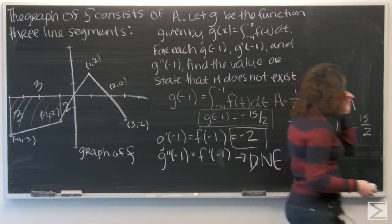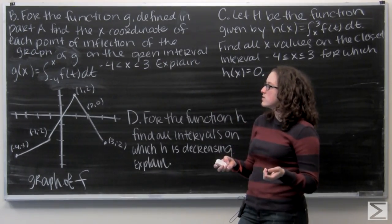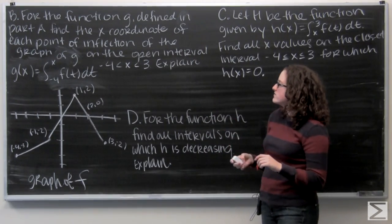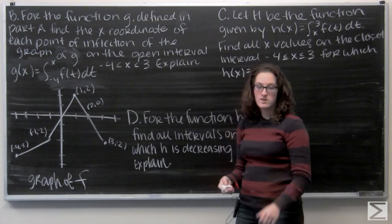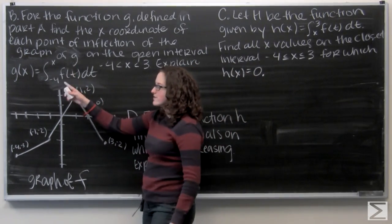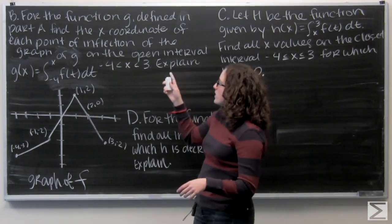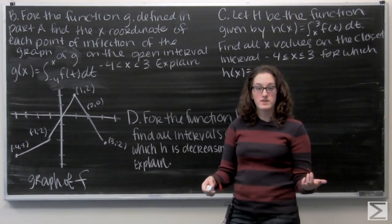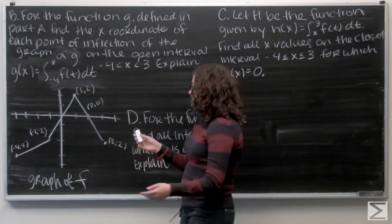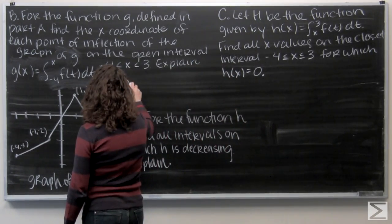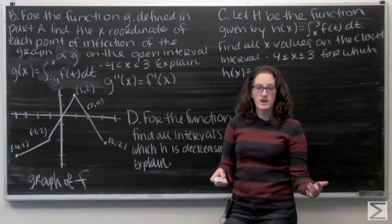Let's move on to part b. We're still looking at the function g. Part b wants us to find the x-coordinate of each point of inflection of the graph of g on the open interval negative four less than x less than three, and explain our answer. If we want to find a point of inflection, that's where the second derivative of g equals zero. The second derivative of g is f prime of x. So I'm asking where f prime of x equals zero.